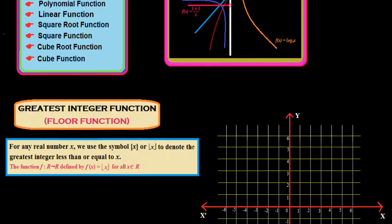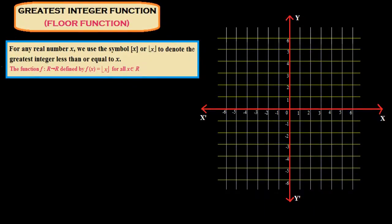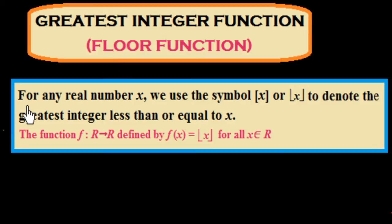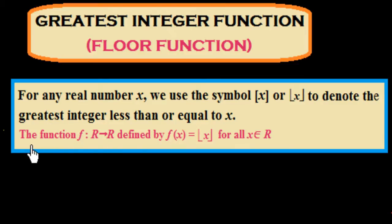Let us start with the greatest integer function, which is also called the floor function. For any real number x, we use the symbol greatest integer of x, or the floor of x, to denote the greatest integer less than or equal to x. In other words, the function f: R to R is defined by f(x) = floor of x, for all x belonging to R.